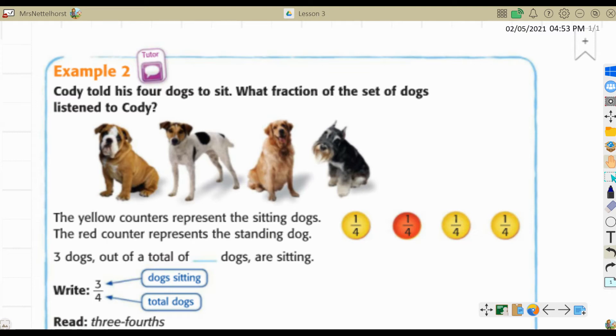The yellow counters represent the sitting dogs. The red counter represents the standing dog. Each counter is one-fourth of the set because there are four total. You can see the unit fractions written on each counter there. One-fourth, one-fourth, one-fourth, one-fourth. So three dogs out of a total of four dogs are sitting.